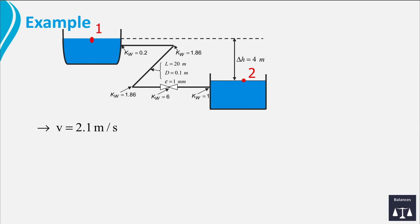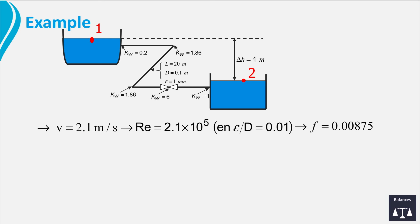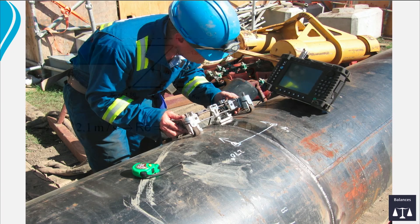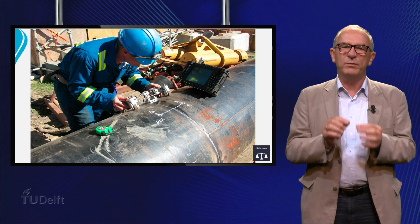The resulting velocity V is equal to 2.1 meters per second, the friction factor F is 0.00875, and the volume flow rate is 16.5 liters per second. Do you already feel yourself an engineer who can design a pipeline? You will see that it is not too difficult, but be aware that you take all the parts of the system into account.